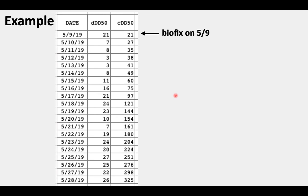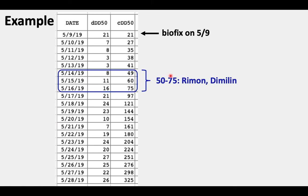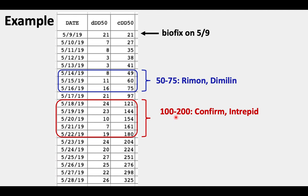Back to our example: in this year, the biofix was the 9th of May. If we were going to apply Rhyno or Dimilin, then we were looking for 50 to 75 degree days cumulative. Looking down the table, we see it would be any of these three days — we could have applied it the 14th, 15th, or 16th of May. If we had been applying Confirm or Intrepid, we were looking for 100 to 200 degree days, which is anywhere between the 18th and the 22nd of May.